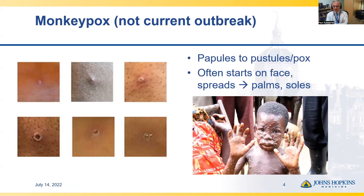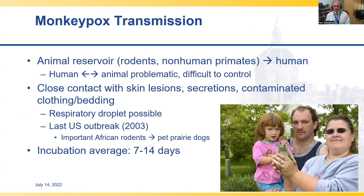Monkeypox as we had understood it often begins as a papule that evolves into a pustule or vesicle-like lesion, then becomes a more classical pox-like skin lesion — and there are multiple, not just one. You can see a child with lesions typically starting on the face and spreading to the body, reflecting disseminated viremia. Unusually for rashes, lesions also appear on the palms and the soles. However, this is probably not what you will see if you encounter monkeypox in the current outbreak.